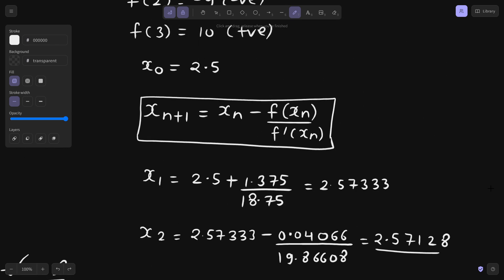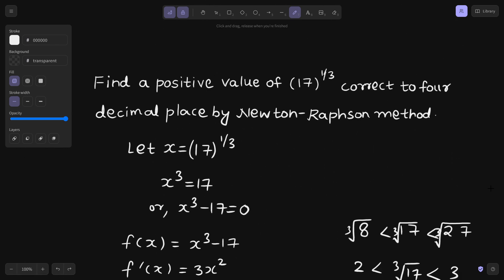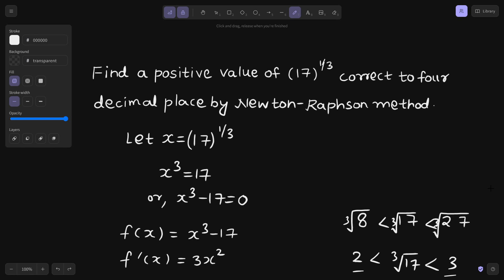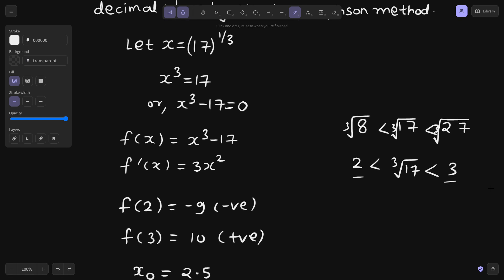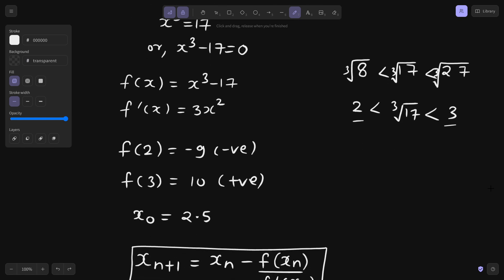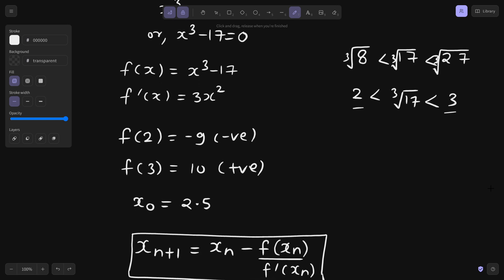That's it for today. We needed to find the cube root of 17. So we cubed both sides, we got an equation x cubed minus 17 equals to 0. That was our function. We found the derivative. That root lies between 2 and 3. Also from the intuition that 17 lies between 8 and 27. If we take cube root throughout then it lies between 2 and 3 and also from the values also.